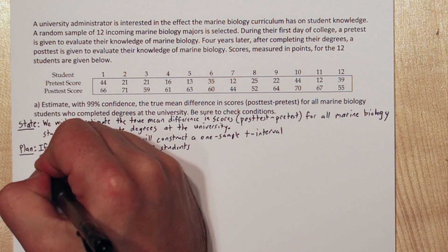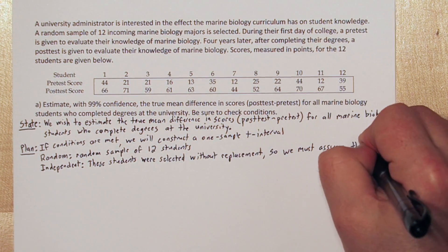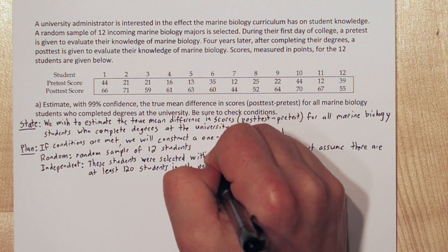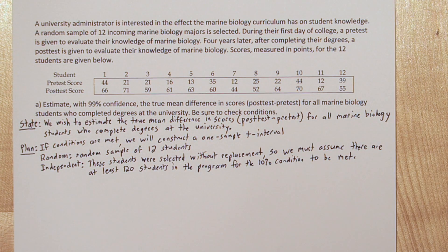Independent, the students were selected without replacement. So we must assume there is at least 120 students in the program for the 10% condition to be met. Also, it's worth noting we're checking independence for the difference in scores. We need to assume that each of the score's differences are independent of the other score's differences. There's obviously an independence violation between the pretest and posttest scores, since it's the same student who took each test, but that's okay. We're just worried about the differences and independence between each of the differences.